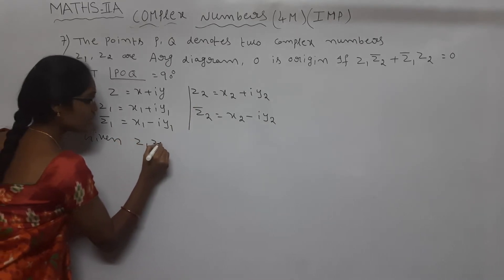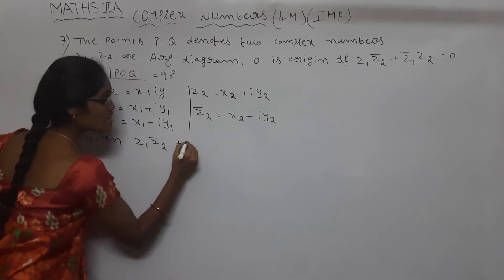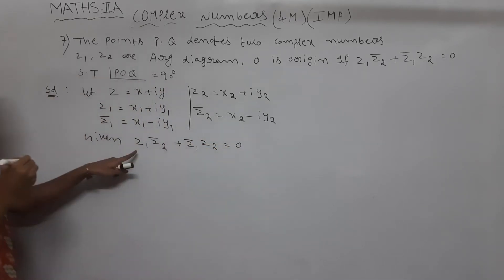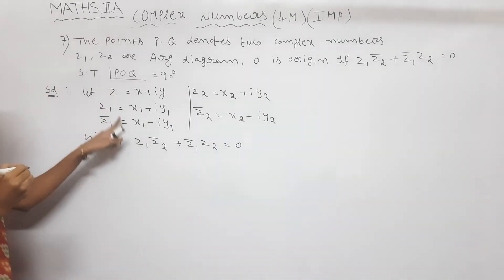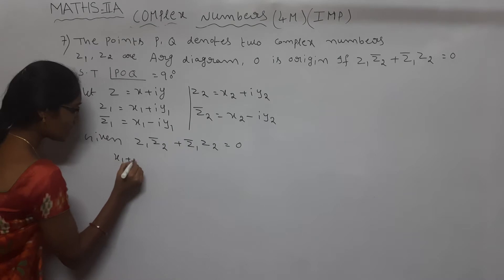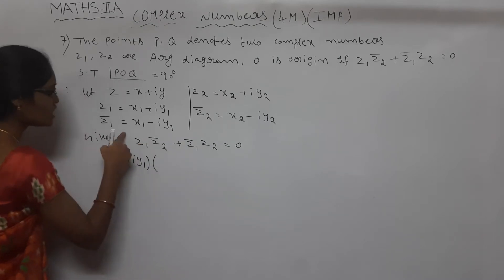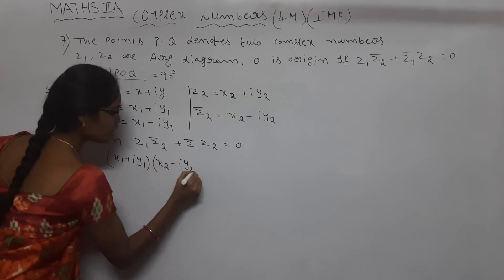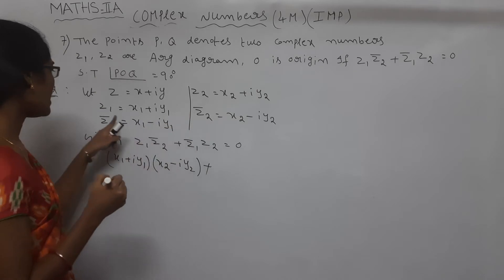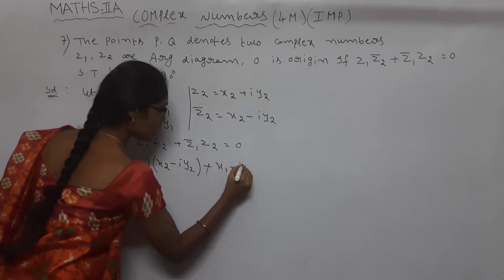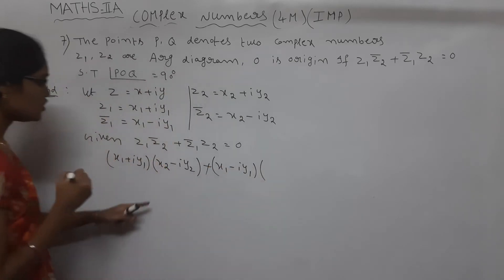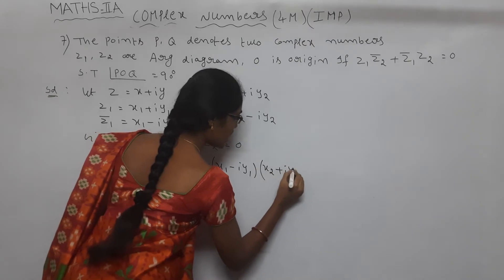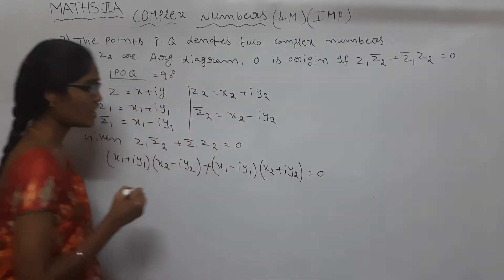Z2 is equal to X2 plus iY2, and Z2 bar is equal to X2 minus iY2. Now substitute these all values into the equation. Z1 value is X1 plus iY1, into Z2 bar value X2 minus iY2, plus Z1 bar value X1 minus iY1, into Z2 value X2 plus iY2 is equal to zero.